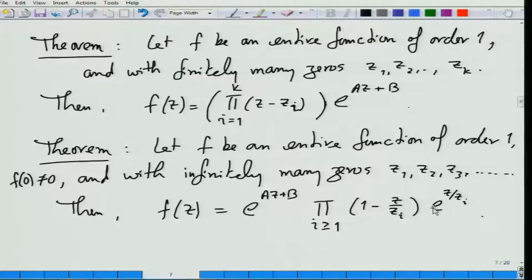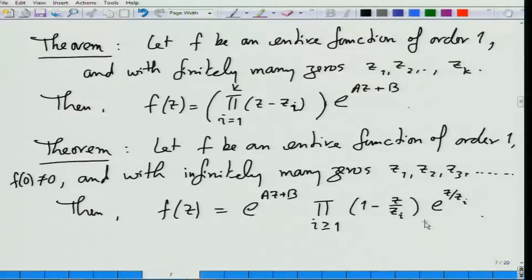To show this, we will necessarily have to use some properties of these roots z_i's — this will not be a convergent function for all possible z_i's. The property we use about z_i's is actually the fact that f, the function we started with whose roots are these z_i's, is a function of order 1.